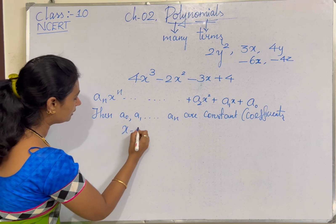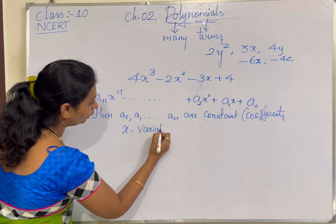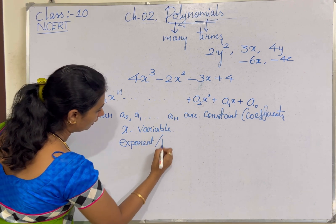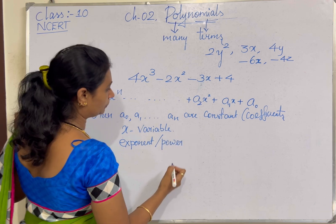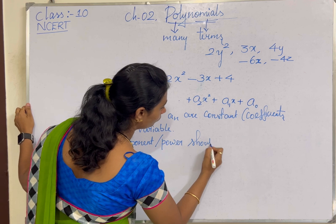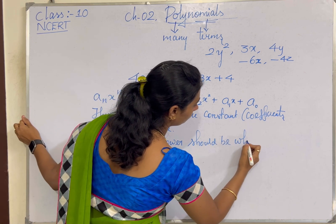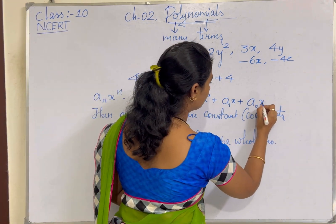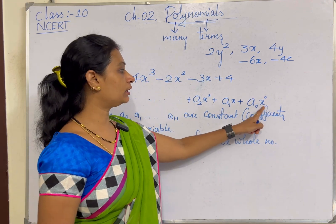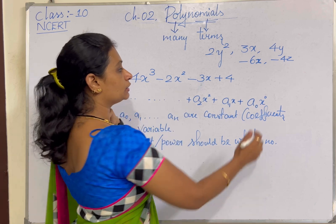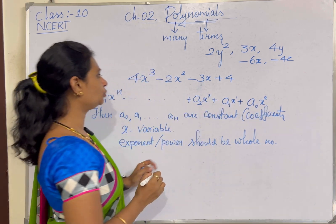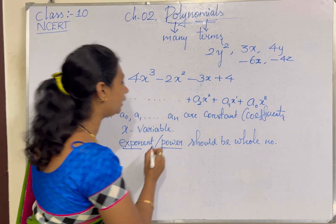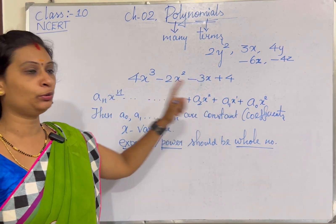The variable x is the variable of the polynomial expression. The exponent, or the power of the expression, should be a whole number. For example, the first term a₀ is nothing but a₀x⁰. We know that any number raised to the power 0 is 1. So the power of x will be 0, 1, 2, 3, 4, 5, etc. up to n. The exponent or the power of the variable must be a whole number, starting from 0 to n.